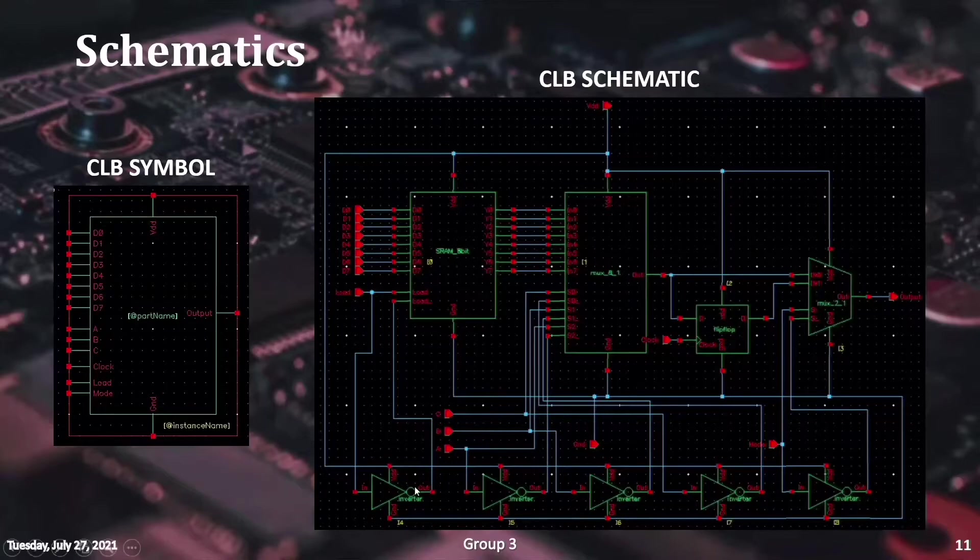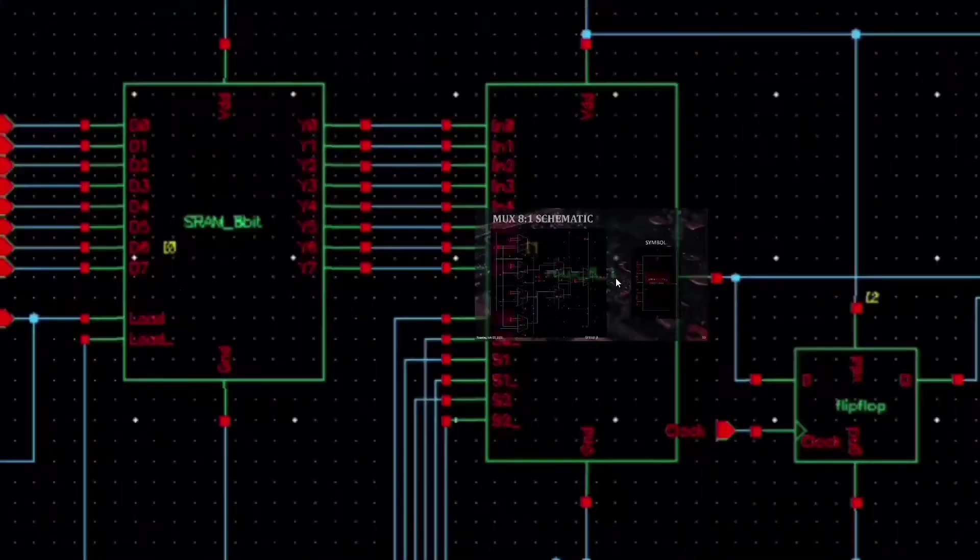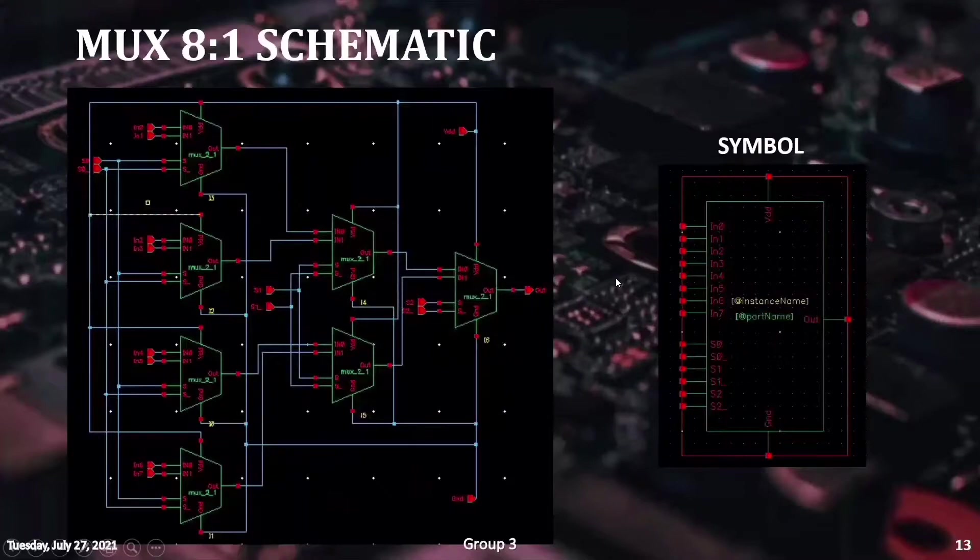The bottom row includes some additional inverters required for some logic operations. This is the base design for 2-to-1 multiplexer.